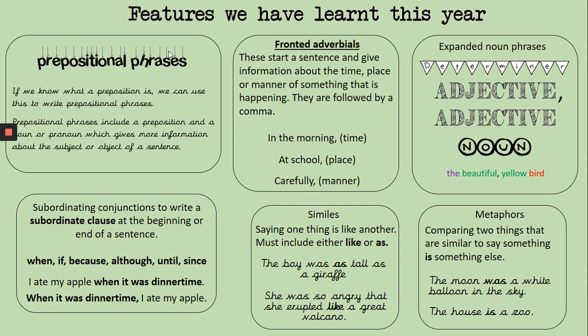Similes and metaphors - we looked at these at the beginning of the year when we did some poem writing. A simile says that something is like something else and uses the word 'like' or 'as'. For example, 'the boy was as tall as a giraffe' - I'm comparing someone to something else. Or 'she was so angry that she erupted like a great volcano' - you can imagine this girl is so cross that she's started shouting or crying, because she's really cross.